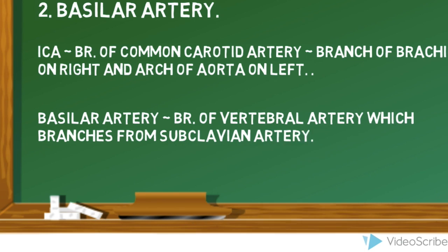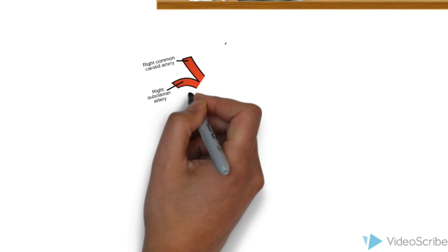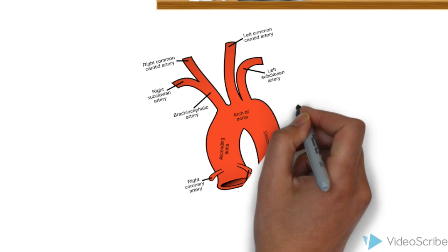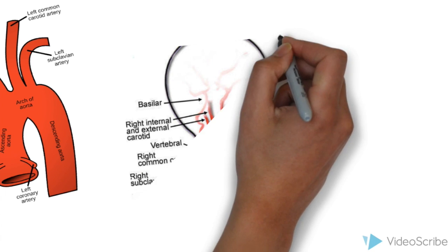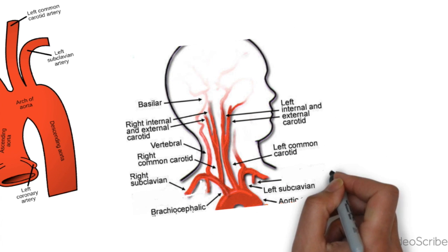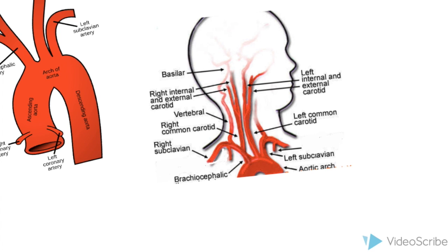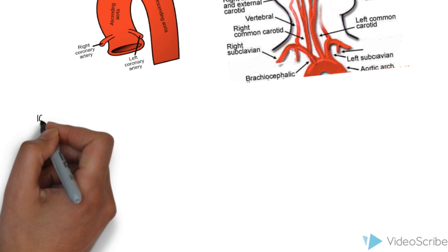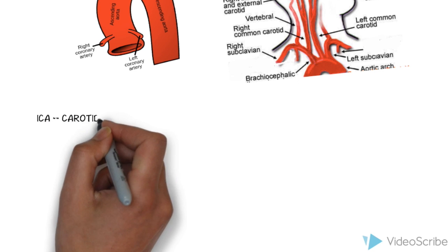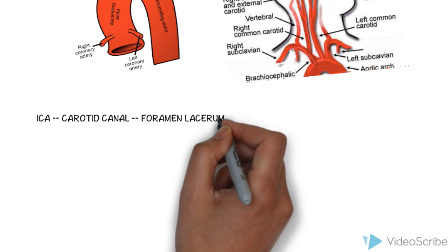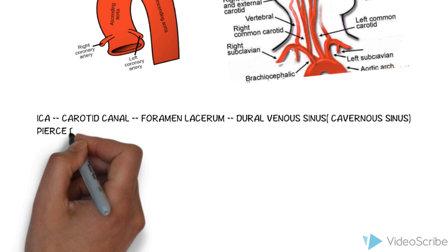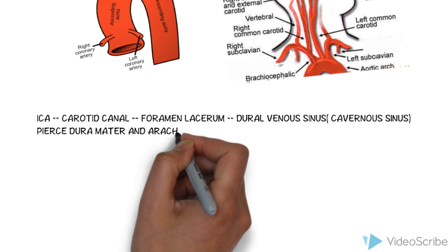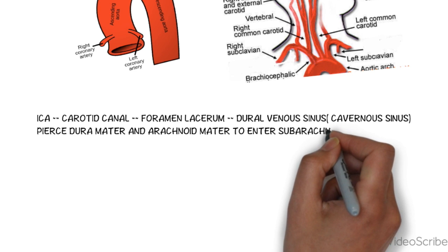In this diagram, we can appreciate the branches of the internal carotid artery from the common carotid artery and the brachiocephalic artery. We can also see the branches of the basilar artery from the vertebral artery and the subclavian artery. The internal carotid artery passes through the carotid canal and enters the cranial cavity via the foramen lacerum, then forwards to the cavernous sinus. All arteries supplying the brain are present in the subarachnoid space.